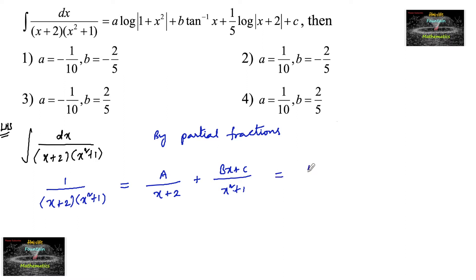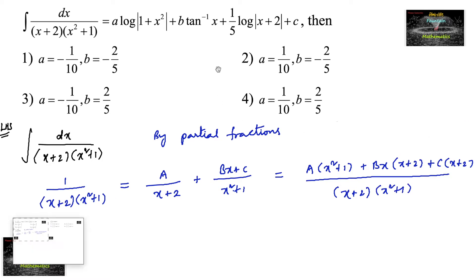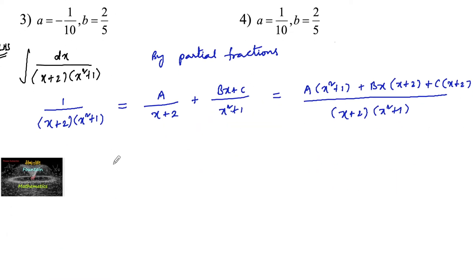This equals A(x²+1) + Bx(x+2) + C(x+2), all over (x+2)(x²+1). Comparing both sides, we have 1 = A(x²+1) + Bx(x+2) + C(x+2).